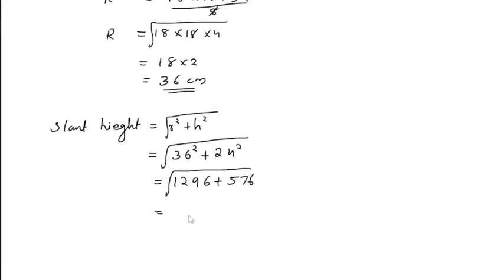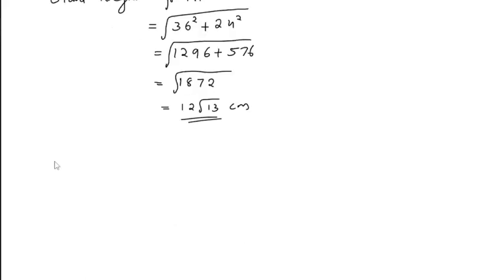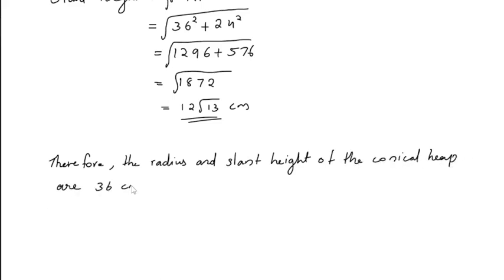Adding together, we get the square root of 1872. Taking square root, we get 12√13 cm. Therefore, the radius and slant height of the conical heap are 36 cm and 12√13 cm respectively.